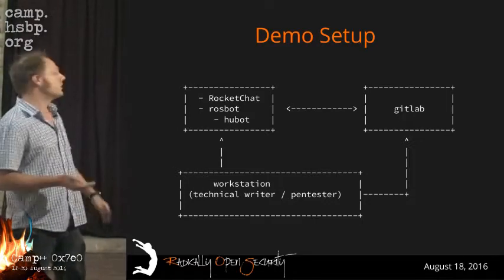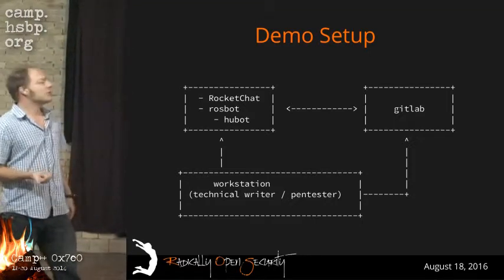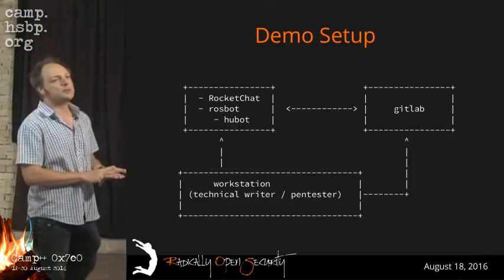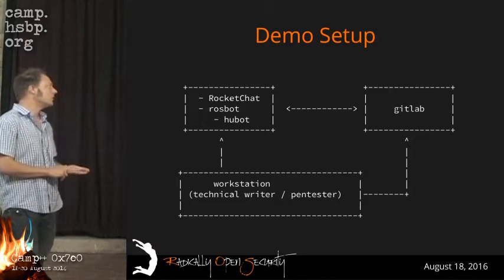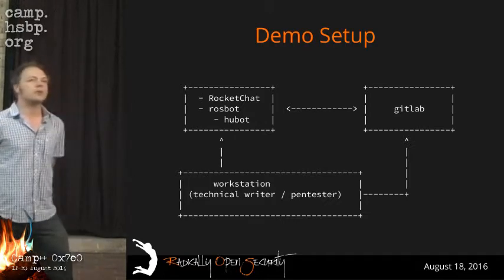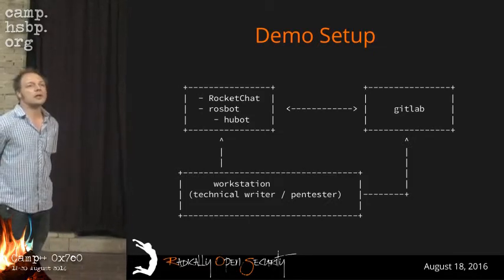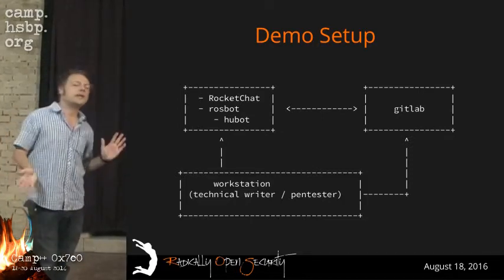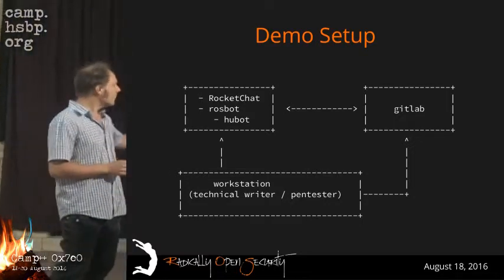I set up two virtual machines. One runs RocketChat — the chat server itself — and on that server I also installed Rasbot, which is our local ChatOps bot based on Hubot. Hubot is an open source chat solution built by GitHub which runs on Node.js. The other server is a GitLab server, which is a basic open source git solution. Everything we do is stored in git — pentest results, scan results, findings, data for quotes, all financial information — we dump everything in git repos.